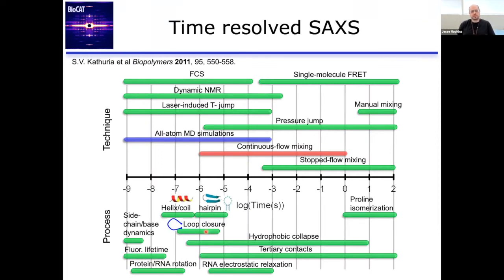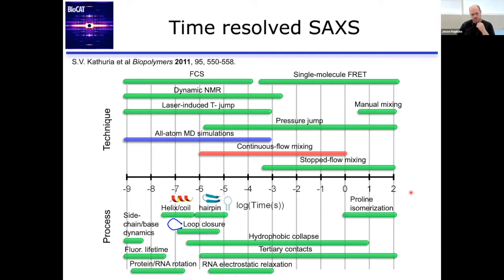This is an overview of different timescales — it's a little old, so it doesn't include the XFL, but it shows accessible timescales on a log scale and corresponding processes. I want to highlight the continuous flow mixing range and stopped flow range, which is what we do at BioCat, and the corresponding changes in macromolecules — from small structural changes and hydrophobic collapse to changes in confirmation and tertiary contacts. As you go faster, you get into more fundamental changes like individual side chains, all the way to protein quakes at the XFL.